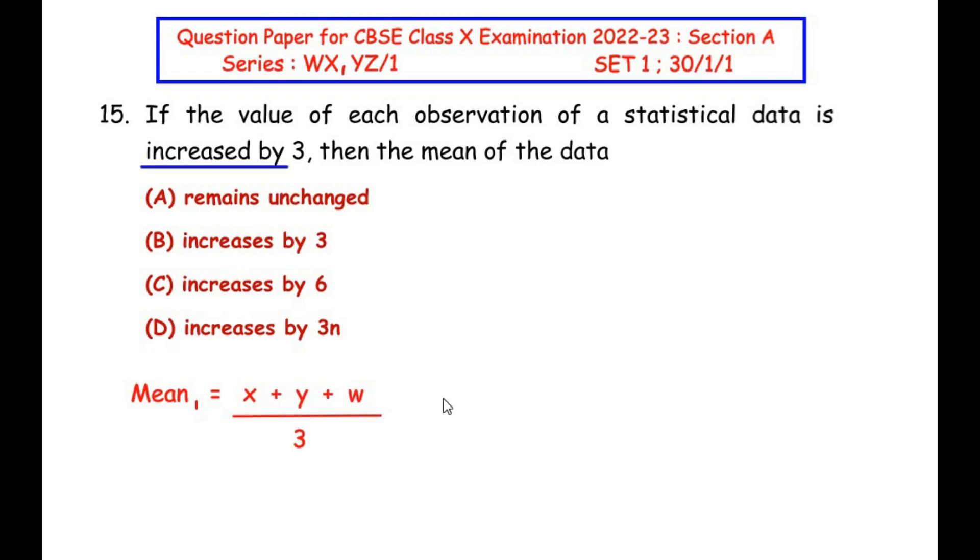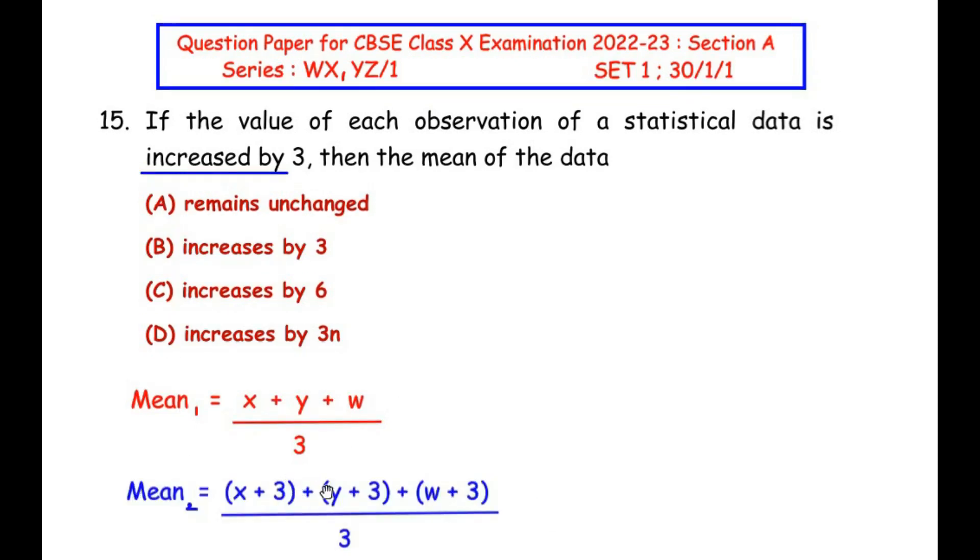Now let us increase each observation and see what will happen to the mean. So I have considered the observations increased by 3 as Mean₂. You can see here x has been increased by 3, y is y plus 3, and w is w plus 3, and since the observations are same, that is 3, we are going to divide Mean₂ by 3 as well.